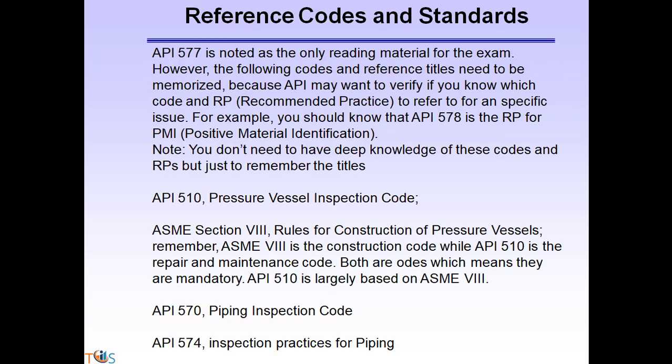Regarding reference codes and standards: API 577 is noted as the only required reading material for the exam. However, the following codes and reference titles need to be memorized, because API wants to verify if you know which code or recommended practice to refer to for a specific issue. For example, you should know about API 578, which is the recommended practice for PMI — Positive Material Identification. You don't need deep knowledge of these codes, just remember their titles, as these could be potential exam questions.